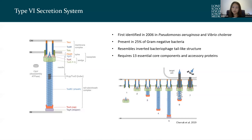To start with, a very brief background on type 6. It is a nano-ejective system present in 25% of gram-negative bacteria. It resembles an inverted bacteriophage tail-like structure. The type 6 structure is comprised of a membrane anchoring structure, a base plate structure, a contractile sheath which surrounds a TssD needle-like tube, topped by a sharp puncturing tip with VGRG and PAR components.